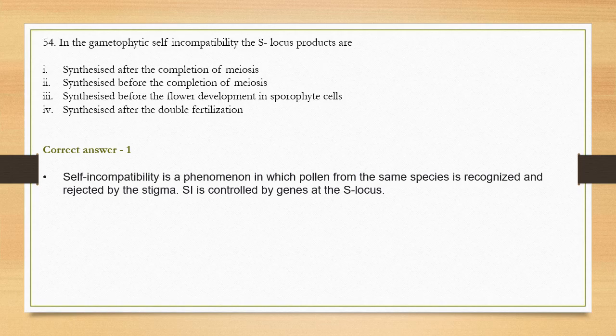Self-incompatibility is a phenomenon in flowering plants where pollen from the same species is recognized and rejected by the stigma, protecting the plant from self-pollination. Self-incompatibility is controlled by genes at the S-locus, and the self-incompatibility gene is formed after the completion of meiosis — this promotes cross-pollination so that variability is maintained in the species.